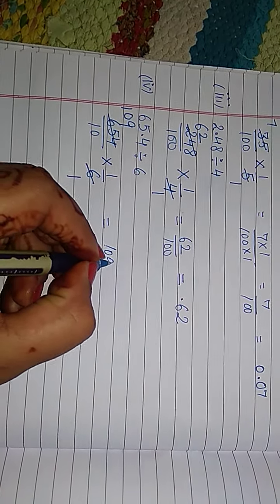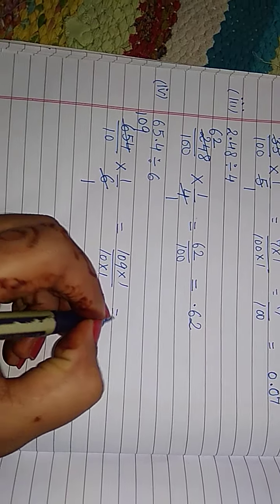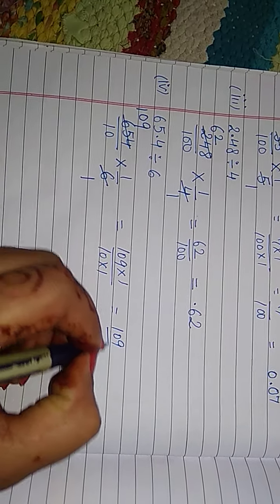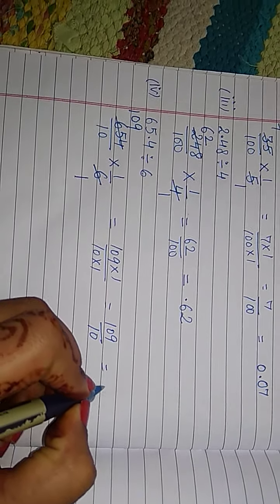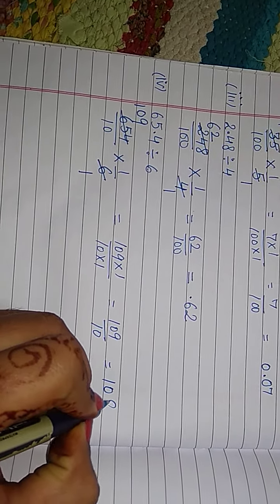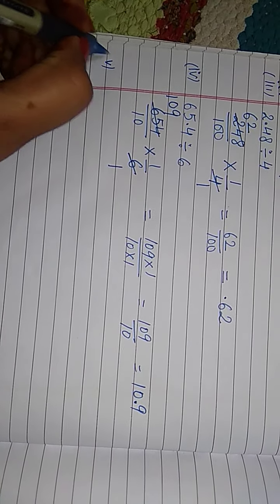Answer is 109 into 1 over 10 into 1. 109 over 10. Put after 1 digit, place decimal. That is 10.9. Now, move to the 5th part.